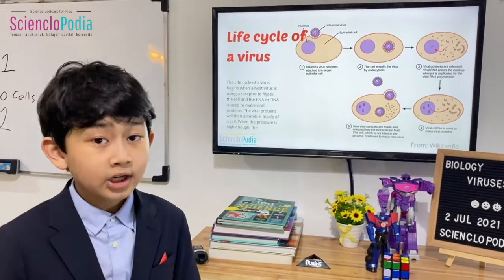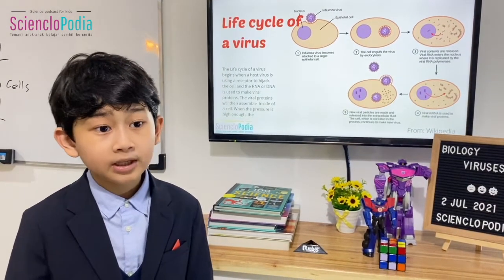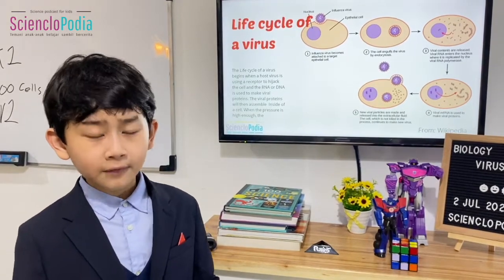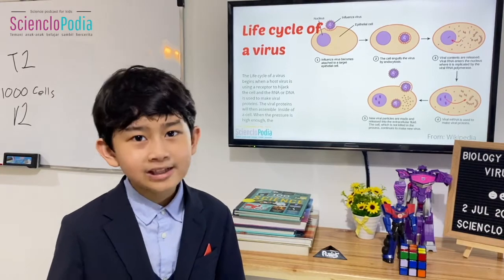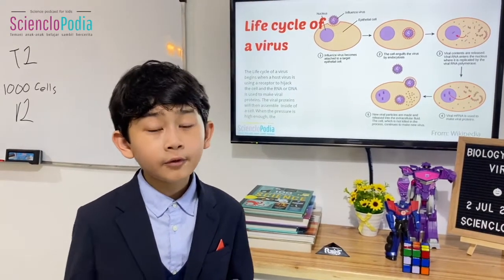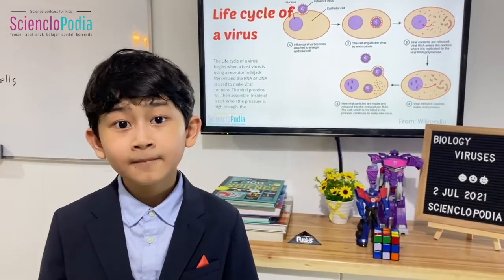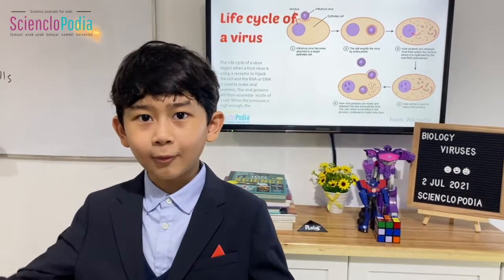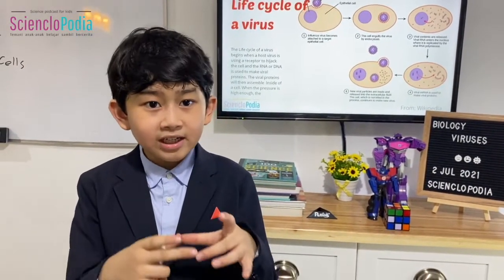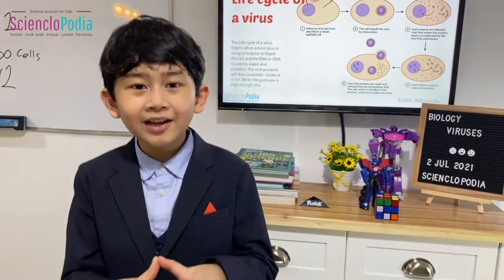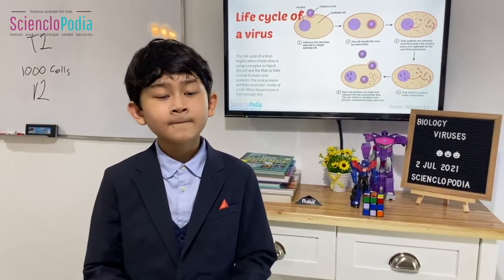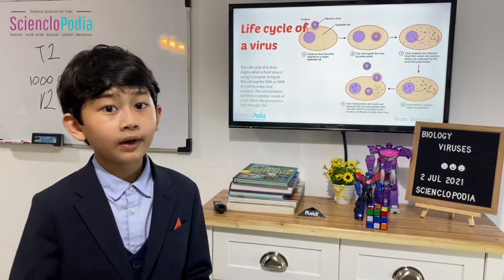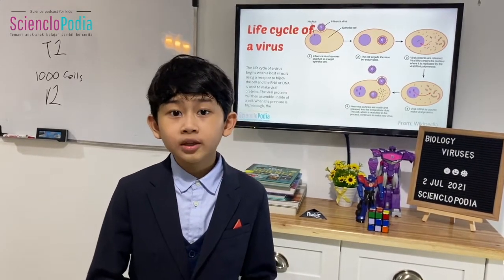Even bacteria can be deadly. Back before antibiotics, we were really vulnerable to bacteria because they could infect your heart, and even a few bacteria inside you could be fatal. There's a bacterium called tuberculosis that was very, very bad. Then there's the story of penicillin, discovered by Professor Alexander Fleming. He found that when fungal spores landed in his petri dish — where bacteria are grown — the bacteria died.